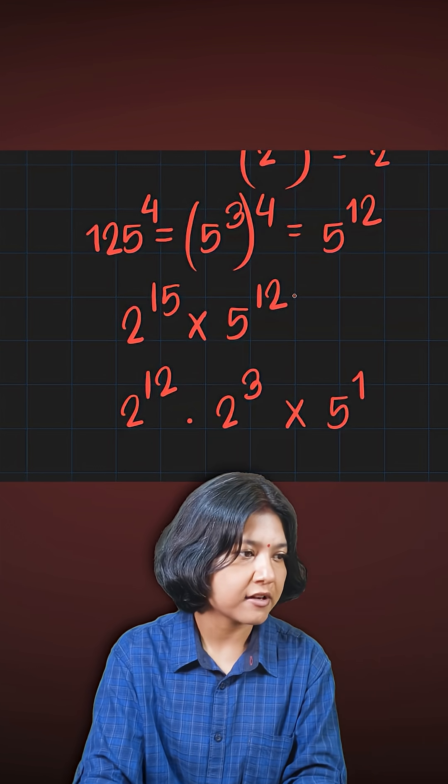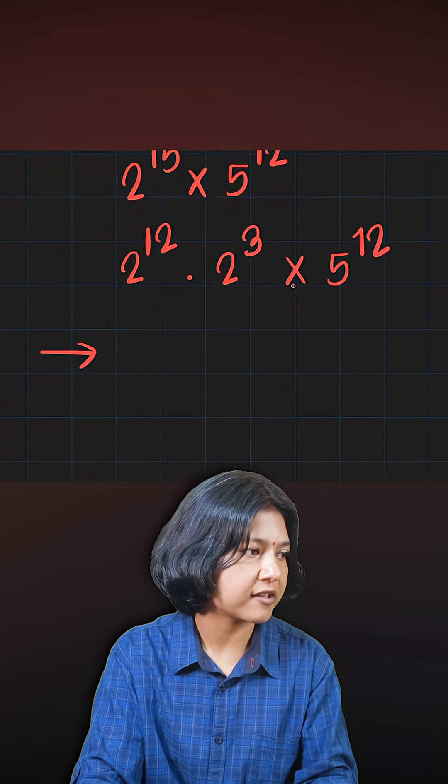Similarly, 5 to the power of 12 I have. Now you see I have two numbers with powers of 12. I'm going to write them together.